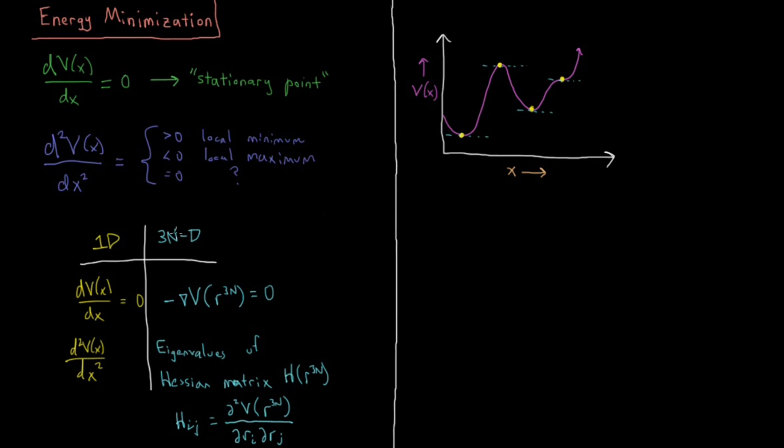In 3N dimensions, we don't have just one coordinate to worry about, but 3N coordinates, and the partial derivatives with respect to all of them matter. So it's a matrix from which you get a bunch of eigenvalues, and we'll discuss more on that later.